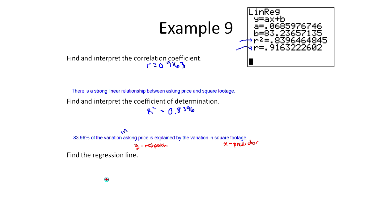Now I'm asked to find the regression line. When I'm asked for the regression line, I'm looking for a Y hat equals something. This comes directly from the calculator as well. It tells me Y equals AX plus B, A is this, B is this. So Y hat equals 0.0686, X plus, and I'm going to just be consistent since I went to four decimal places here, I'll do the same thing over here, 83.2366. And so this is my regression line.